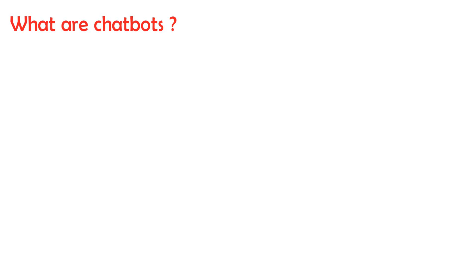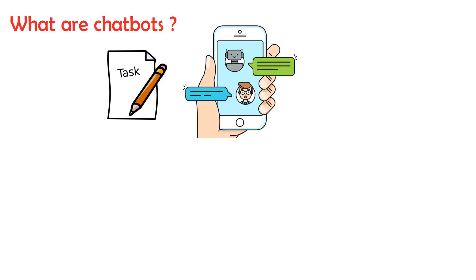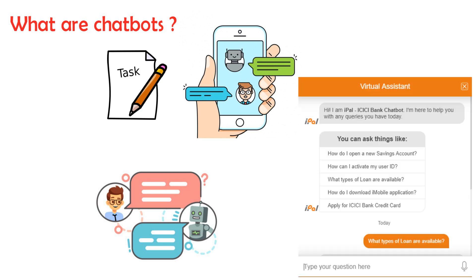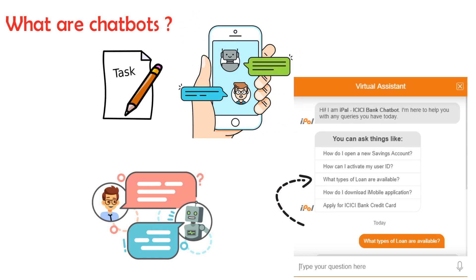What are chatbots? Generally speaking, a bot is any software that performs an automated task. However, we are interested in the class of bots that live online in chat platforms or on social media, called chatbots. The most intuitive definition is that a bot is software that can have a conversation with a human. For example, a user could ask the bot a question or give it an instruction, and the bot could respond or perform an action as appropriate.